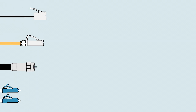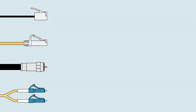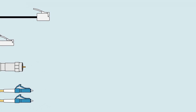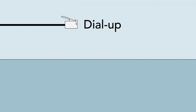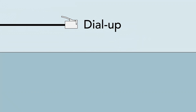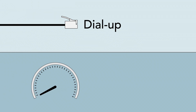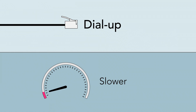Let's look at a few different types of internet connections that you can have. Dial-up connects to your phone line. It's usually much slower than other types of internet connections, but in some areas it may be the only option available.